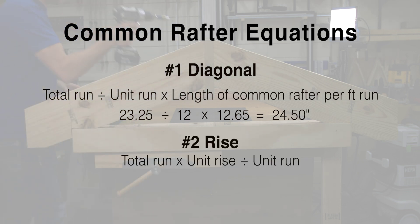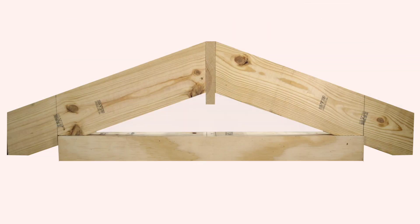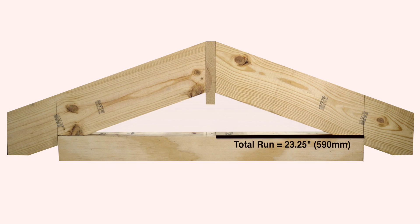Next is the rise. 23.25 times 4 divided by 12 equals 7.75 inches of rise. Therefore, our total run is 23.25, our rafter length is 24.5, and our rise is 7.75.